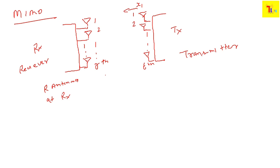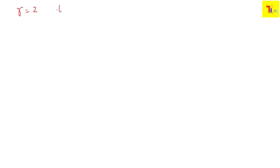Looking at the broad model of transmit and receive antennas, I'll take a 2×2 example where R equals 2 and T equals 2. In this two-by-two channel model, we have two receive antennas and two transmit antennas.